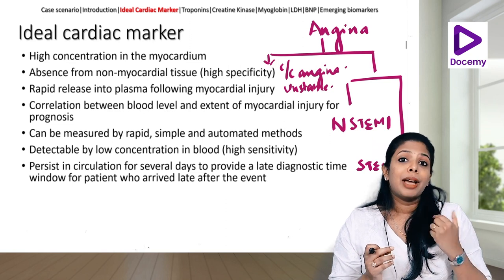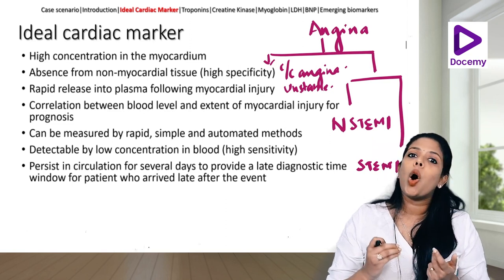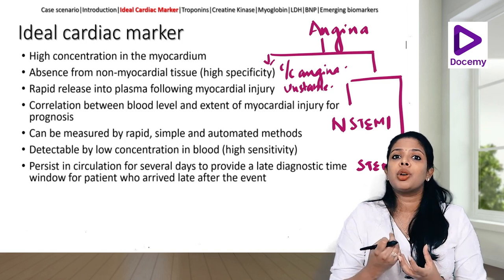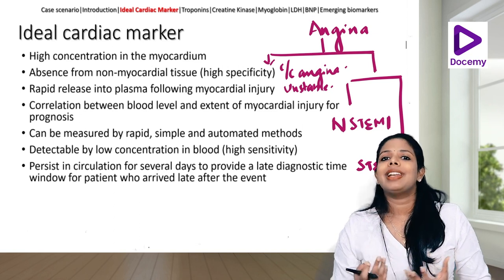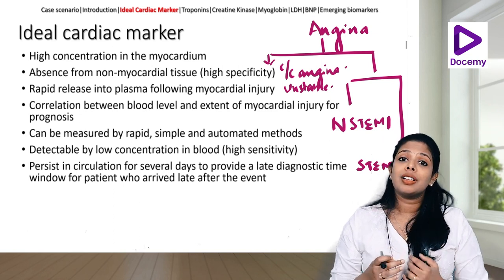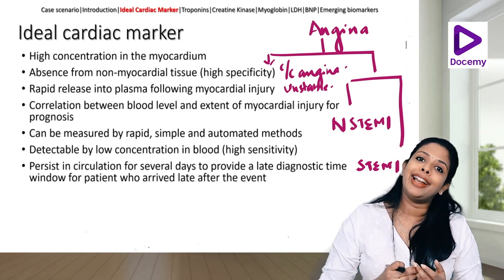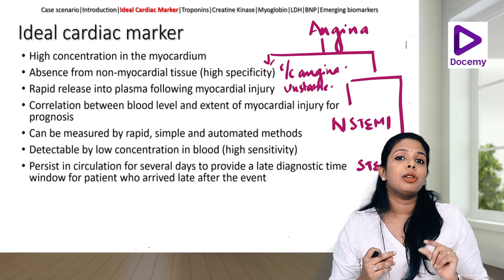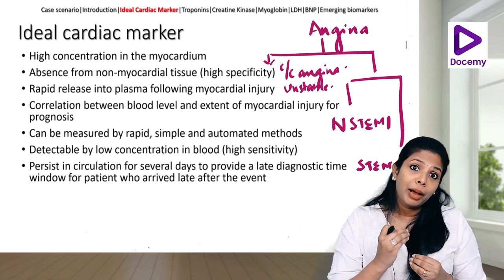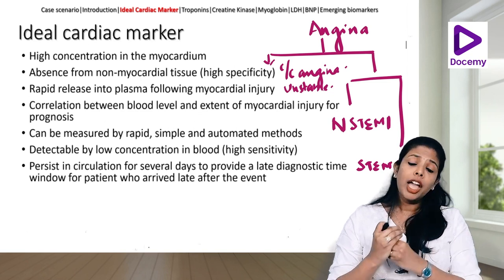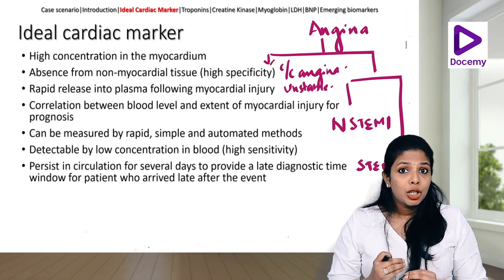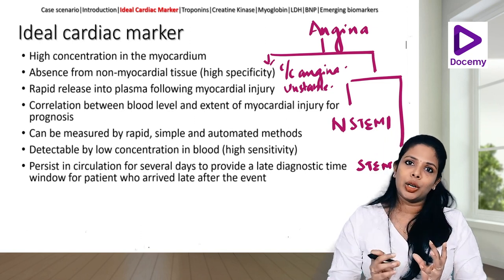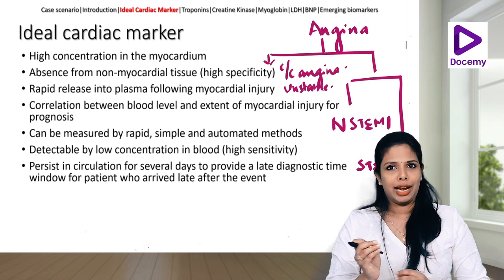We should be able to measure it rapidly using simple automated methods, because if you have to use a very complicated method that takes 24 hours, we may lose the window period to thrombolyze the patient. So it is very important to have a rapid diagnostic assay, and even small minute quantities of the cardiac biomarker should be detectable. These cardiac biomarkers should also remain in circulation for a prolonged duration — at least five to seven days.